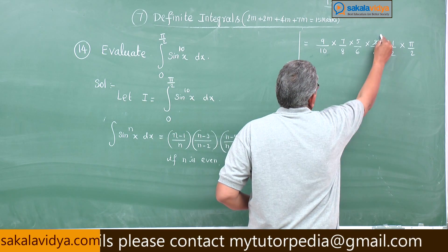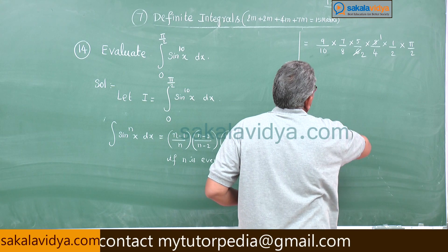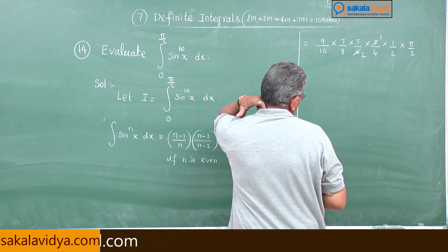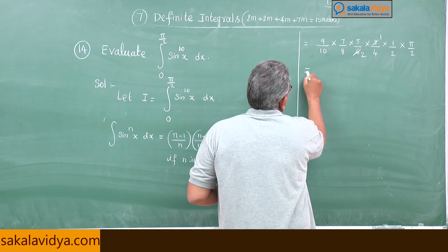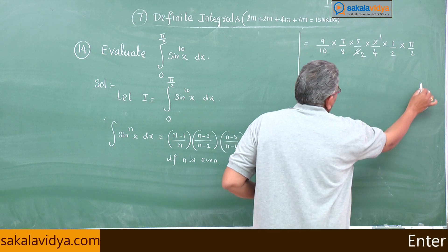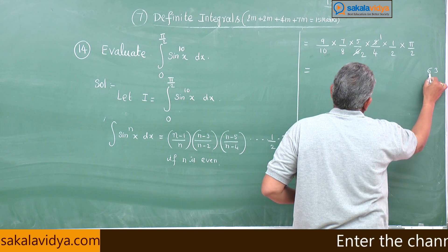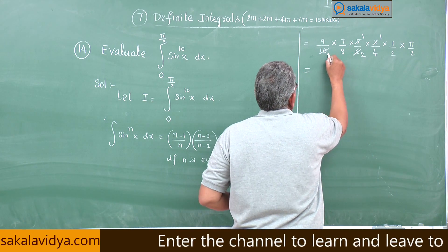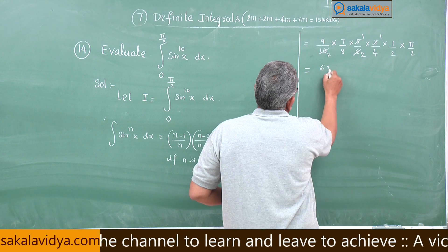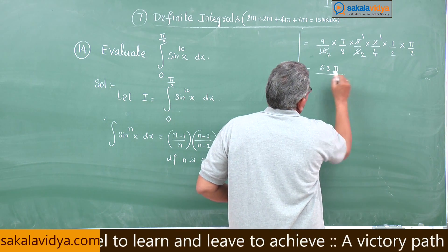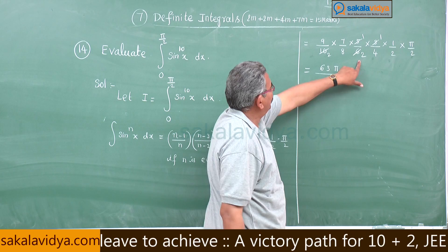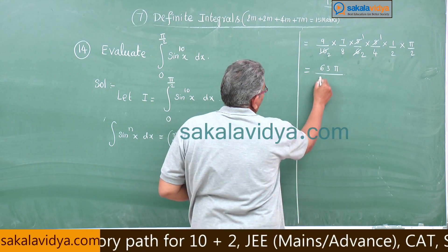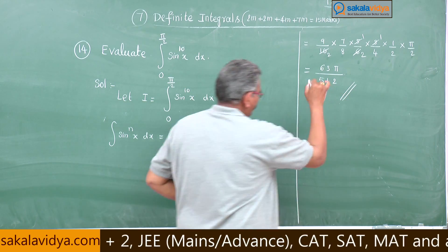Any cancellation we have to do it, no we cannot cancel anything. 63 into 5, 5 1, 5 2 also gets cancelled. 63 pi by 2, 2 is 4, 16, 32, 32 into 2, 64, 64 into 8, 5 12. This is 5 12, 64. Answer is over.